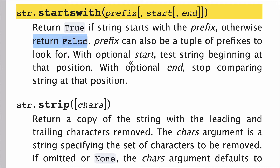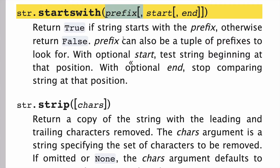One interesting thing about the prefix is that it can actually be a tuple of prefixes. So basically, you can either pass a string or you can pass a tuple of strings — a list of potential strings. And we have the optional start and end arguments, which work like slice notation in Python. If you're comfortable with slice notation, then this is going to make a lot of sense.